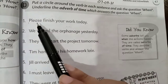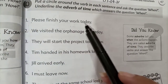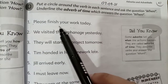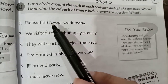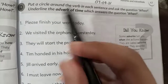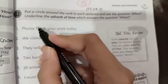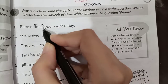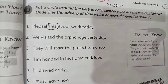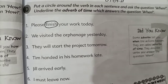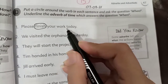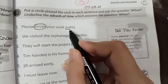Let's start. 'Please finish your work today.' The verb here is 'finish' — put a circle around it. And when do we finish our work? Today. So 'today' is your adverb of time — underline it.